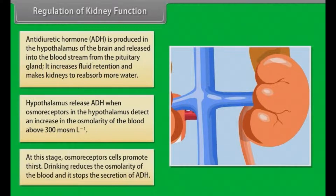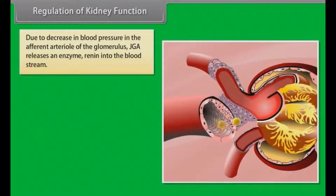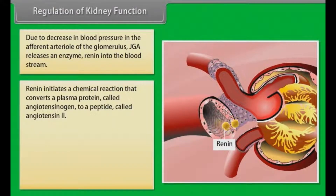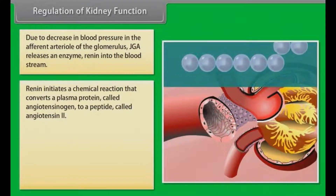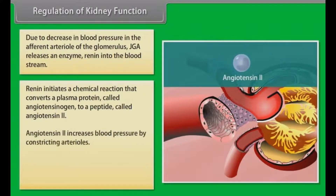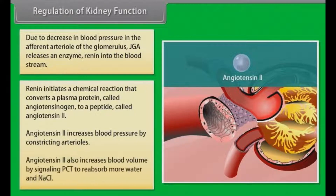At this stage, osmoreceptor cells promote thirst. Drinking reduces the osmolarity of the blood and stops the secretion of ADH. Due to a decrease in blood pressure in the afferent arteriole of the glomerulus, the juxtaglomerular apparatus (JGA) releases an enzyme, renin, into the bloodstream. Renin initiates a chemical reaction that converts the plasma protein angiotensinogen to a peptide called angiotensin-2. Angiotensin-2 increases blood pressure by constricting arterioles and increases blood volume by signaling the PCT to reabsorb more water and NaCl.